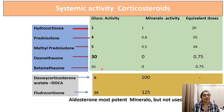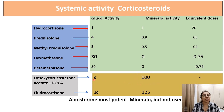Betamethasone has a glucocorticoid activity of 30, mineralocorticoid activity of 0, and a dose of 0.75 mg. Deoxycorticosterone acetate (DOCA) has a glucocorticoid activity of 0 but mineralocorticoid activity of 100, as it is a pure mineralocorticoid. Fludrocortisone has a glucocorticoid activity of 125.